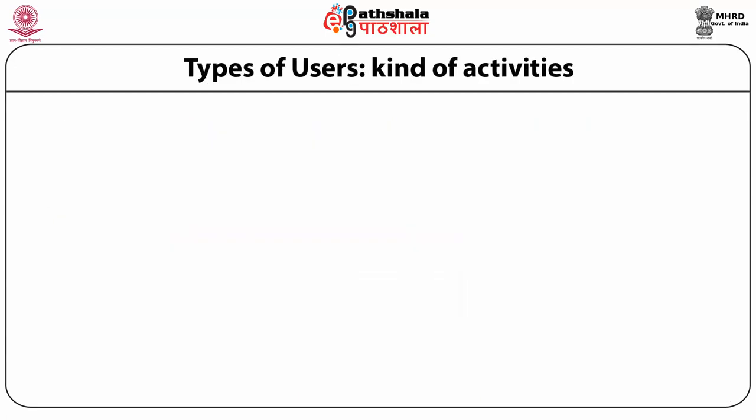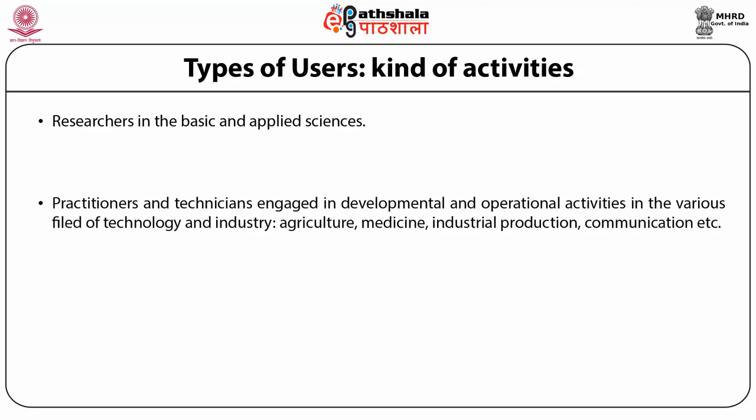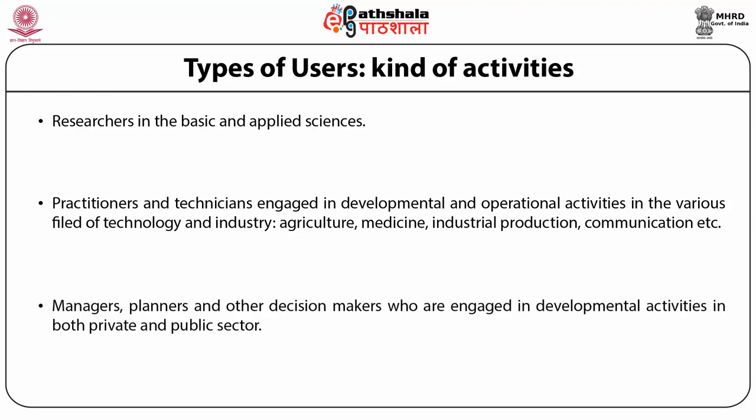Let us discuss the different types of users. These types are based on the kind of activities performed by the user. The first kind is researchers in the basic and applied senses. The second kind is practitioners and technicians engaged in developmental and operational activities in various fields of technology and industry — for example, agriculture, medicine, industrial production, communication, etc. The third is managers, planners, and other decision makers who are engaged in developmental activities in both the private and public sector. So basically, users are divided into three types: researchers, practitioners, and managers or planners.